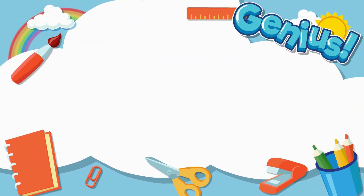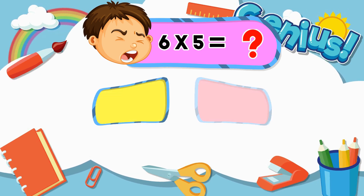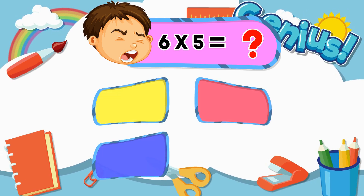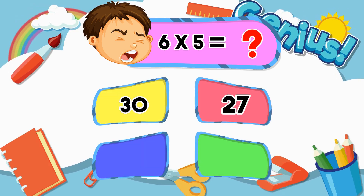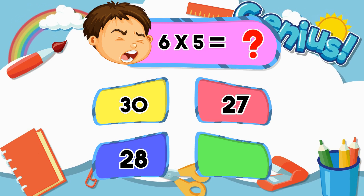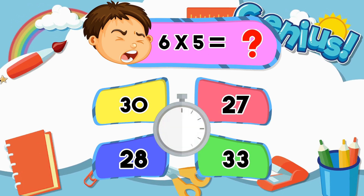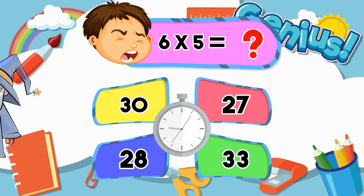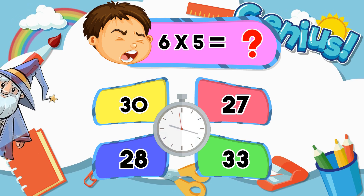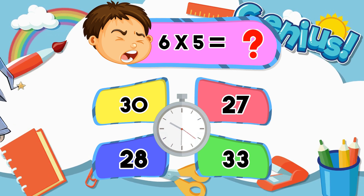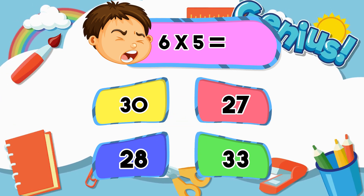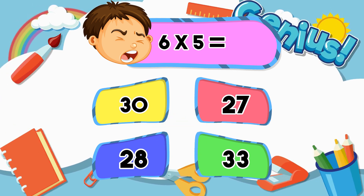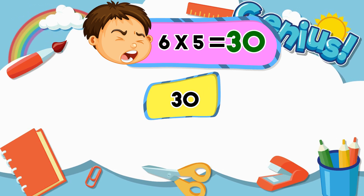What is 6 times 5? 30, 27, 28, 33. [Answer:] 30.